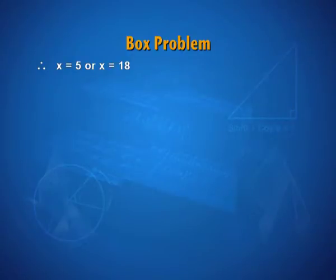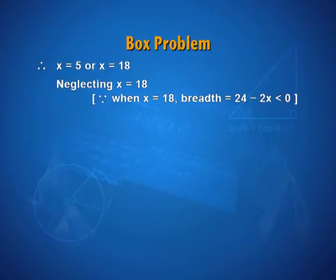Now, x equal to 18, is that a possible value? No. Why? Because when the value of x is 18, breadth becomes less than 0, not a possibility. So, we reject or neglect x as 18 and concentrate on x equal to 5.